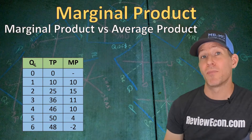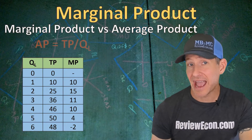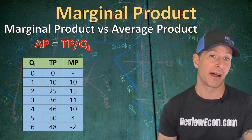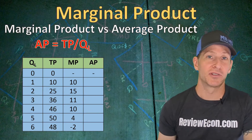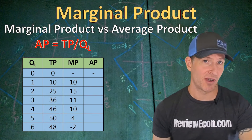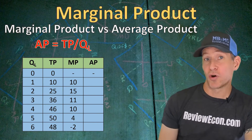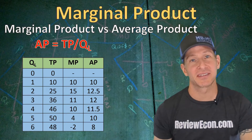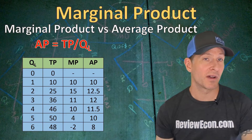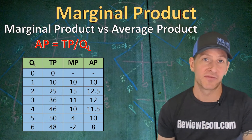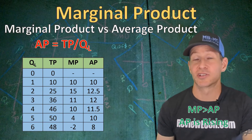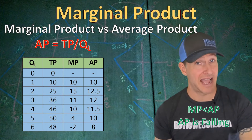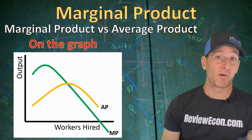You could see questions on your exam about marginal product versus average product. The average of anything is the total divided by the quantity. Here we take total product and divide by the quantity of workers hired. The first worker has a total product of 10 divided by 1 — an average product of 10. With four workers, total product of 46 divided by 4 gives us 11.5 units per worker. Whenever marginal product is greater than average product, average product will be rising; when marginal product is less than average product, average product will fall.